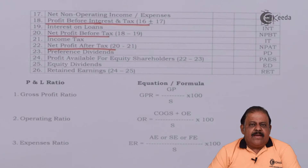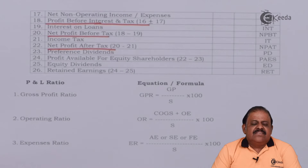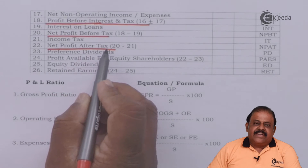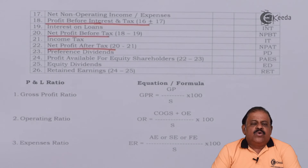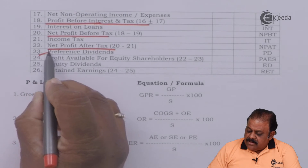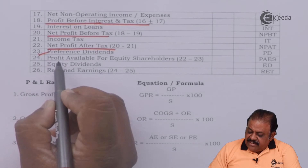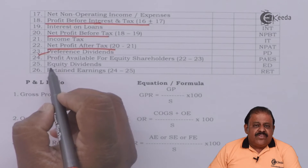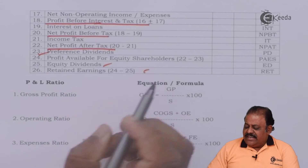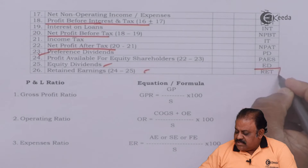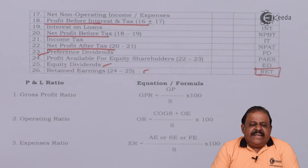From profit after tax we can do appropriation. We add the opening balance of net profit after tax; if there was a loss in the previous year, it is deducted, to get the total amount of profit available for appropriation. From that we deduct preference dividend, equity dividend, and transfer to reserves, thereby arriving at retained earnings. The final surplus amount is transferred to the balance sheet and is called retained earnings.